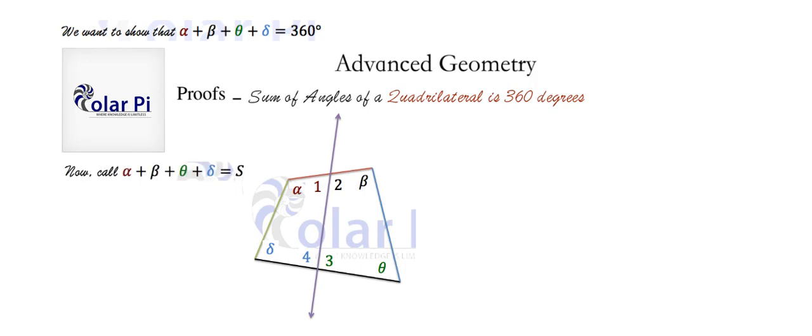Call the sum, which we're claiming we don't know yet, and we're going to show that S is 360. But since we're claiming right now that we don't know what the sum of alpha, beta, theta and delta is, let's call it S. Then what we're saying basically is that the sum of four angles in a quadrilateral has the value S.